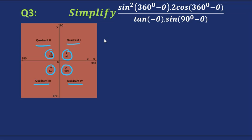Let's simplify the expression. For 360 minus theta — remember 360, so if we subtract we're going clockwise — 360 minus theta will be in the fourth quadrant. And in the fourth quadrant, sine is negative. So we've got sine of negative theta. But don't forget the square — you must square the bracket.